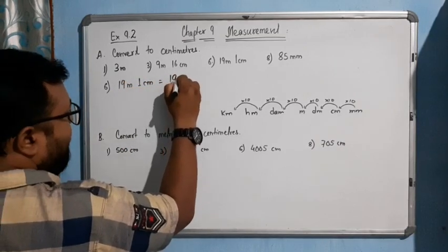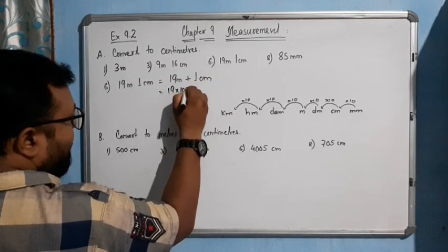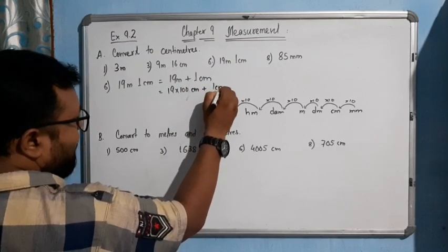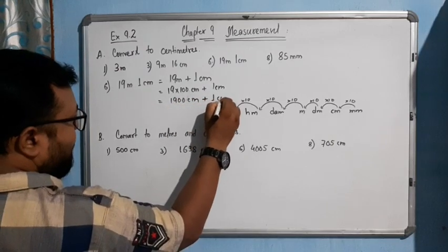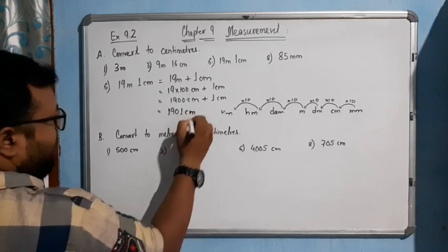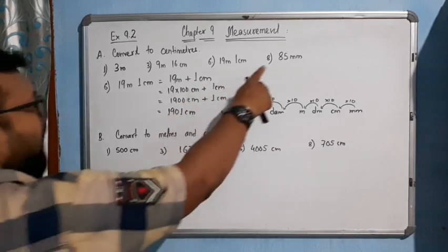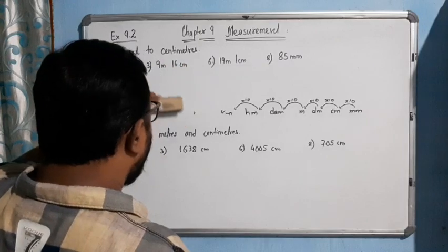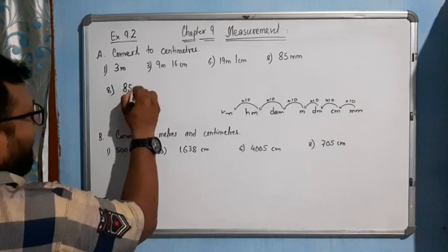Now question 6: 19 meters and 1 centimeter. That means 19 meters plus 1 centimeter, which is 19 into 100 centimeters plus 1 centimeter, giving 1901 centimeters. I hope you have understood this one.